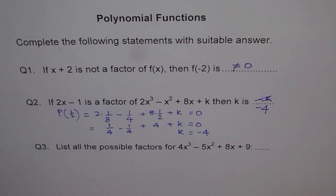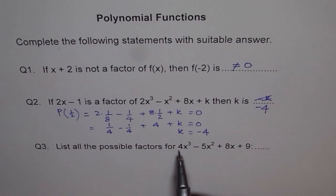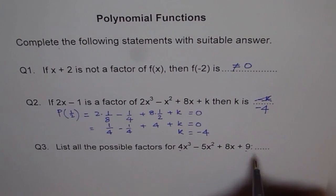Question number 3: List all the possible factors of 4x³ - 5x² + 8x + 9. So long list, right? You know what? This list includes factors of 9 and factors of 9 divided by factors of 4. Remember that, don't miss out. There's 4 here. Therefore, factors of 9, the constant, and all combinations including these factors divided by factors of 4.